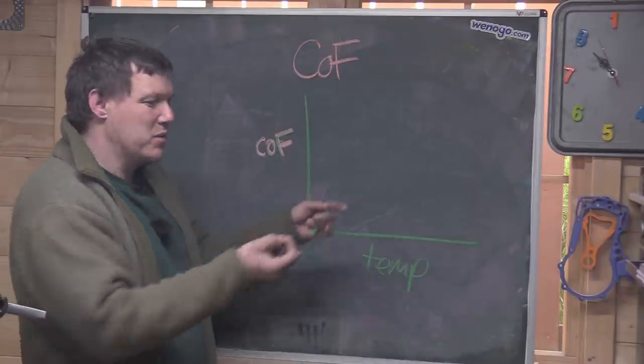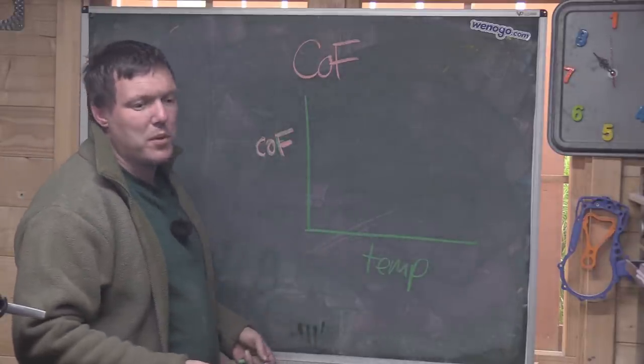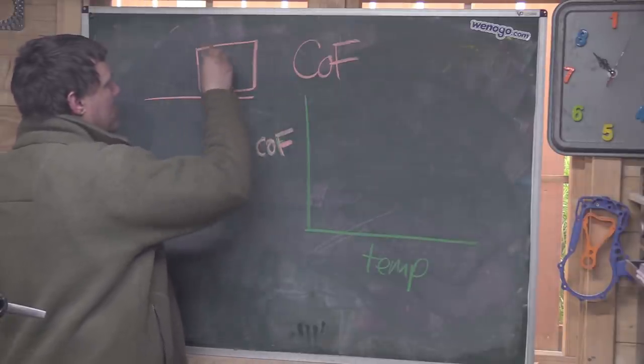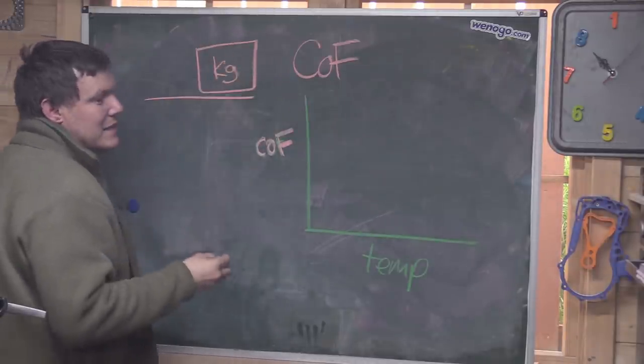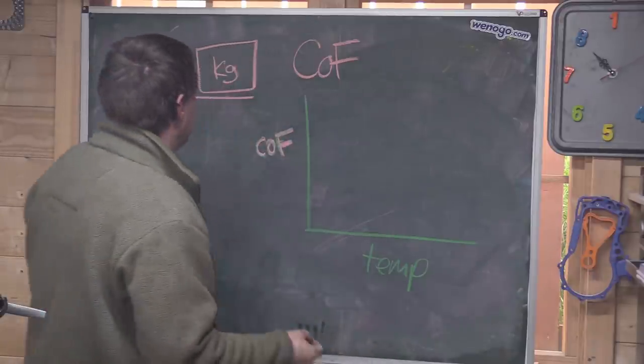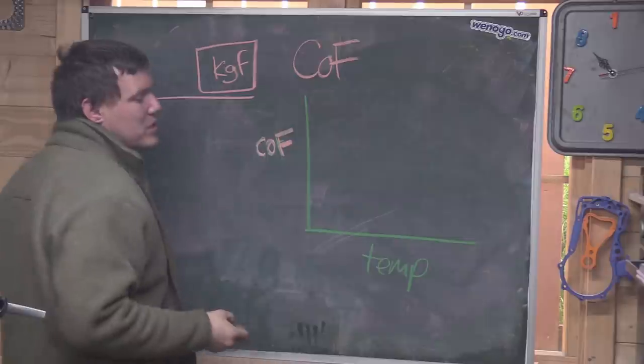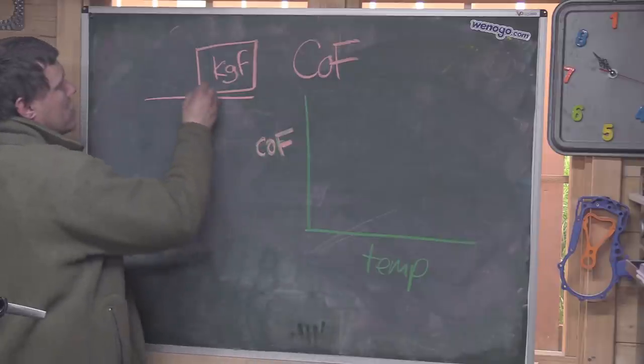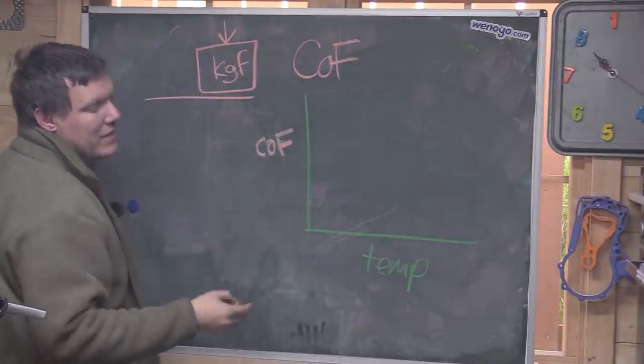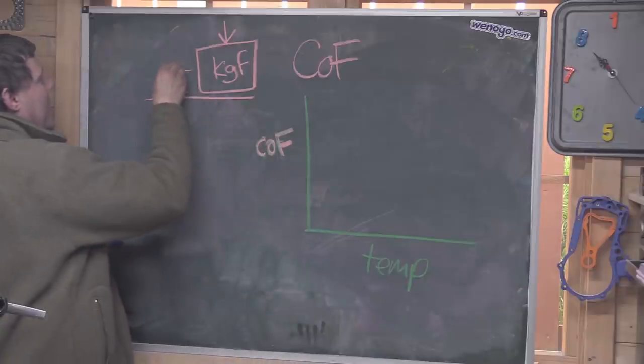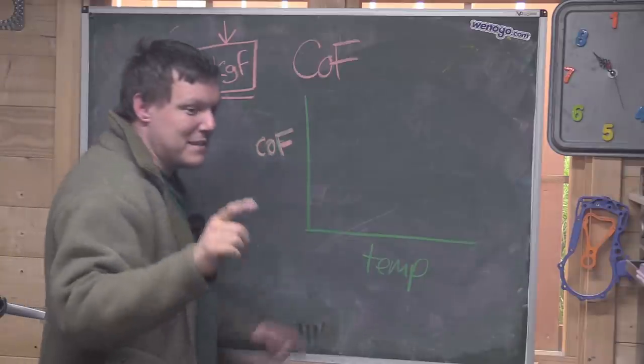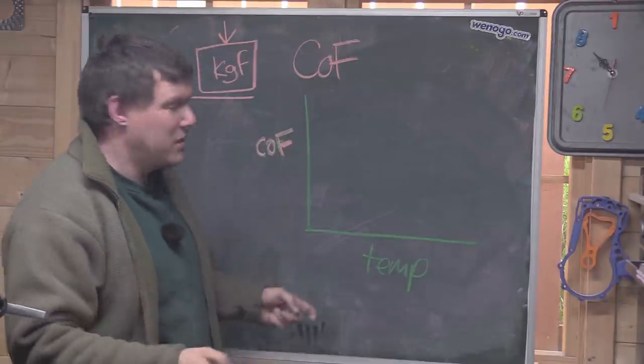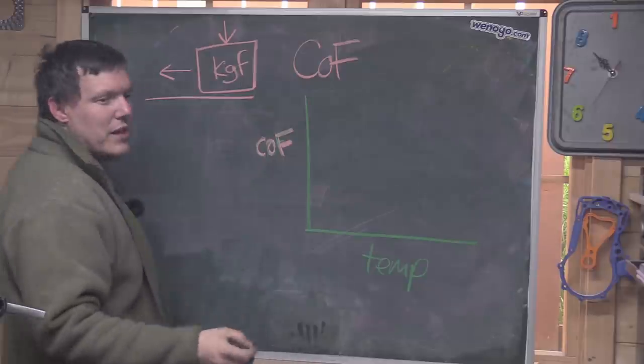It's a ratio between how much load something can take and how much it can be pulled by. In essence, you've got a surface, you've got a mass of something in kilograms. Kilograms is basically a force, right? You can have kilograms force, which is just accelerating a mass. So basically you have the force of gravity. If you pull something with a mass of a kilogram with a kilogram's worth of force, that would be one to one, so that would be a CoF of one.